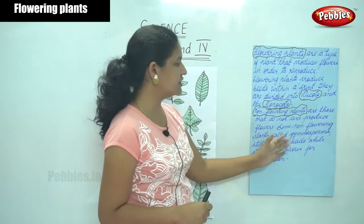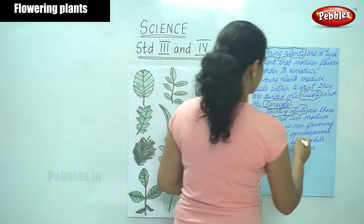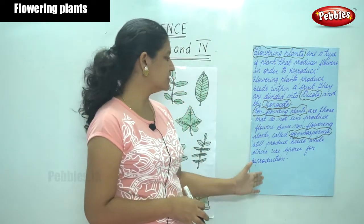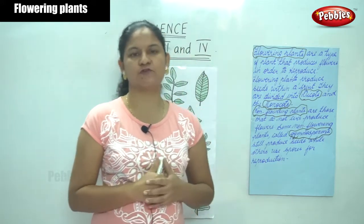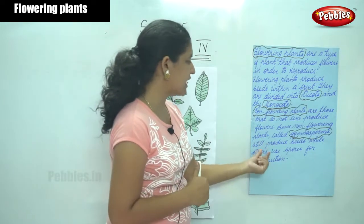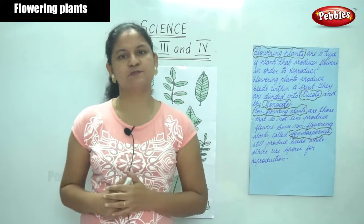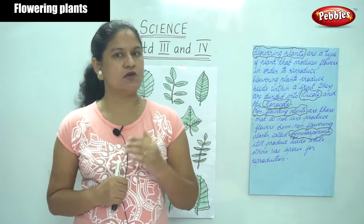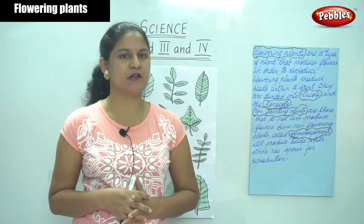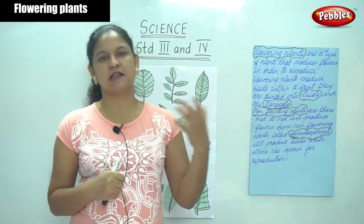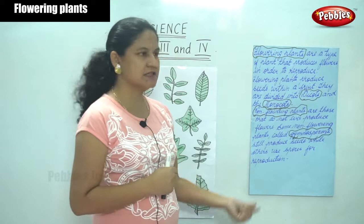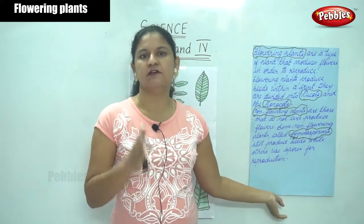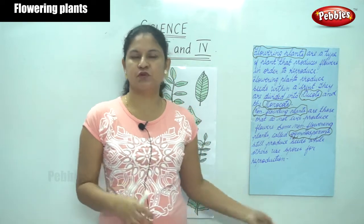Some non-flowering plants are called gymnosperms. Gymnosperms still produce seeds while others use spores for reproduction. So there are certain groups of non-flowering plants called gymnosperms that produce seeds like flowering plants, whereas the others use spores for reproduction. This is the key difference: flowering plants produce flowers and seeds within a fruit, while non-flowering plants do not produce flowers.